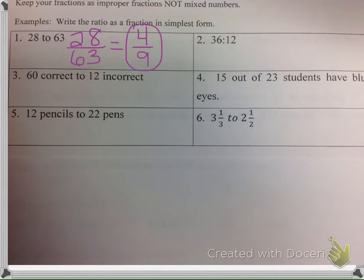You always write the ratio as a fraction, unless it asks you to write it a different way — like 'write the ratio three different ways.' Then I would write 4 over 9 as a fraction, 4 to 9 using the word 'to', and 4 colon 9 using a colon.